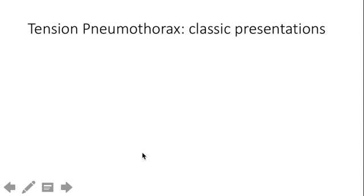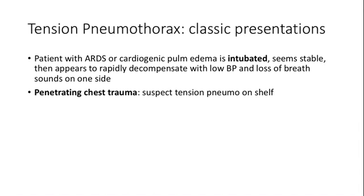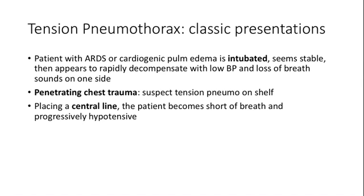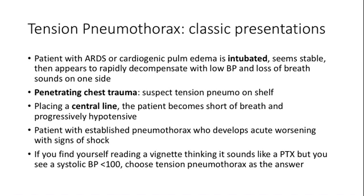Classic tension pneumothorax presentations to recognize in vignettes: a patient on a mechanical ventilator or with ARDS who was improving and then rapidly decompensates with hypotension and loss of breath sounds; anyone with penetrating chest trauma — call it tension pneumothorax until proven otherwise; a patient who develops shortness of breath and goes into shock while a central line is being placed; or a patient with a previously simple pneumothorax who acutely worsens and becomes hypotensive. Key rule: if you see a pneumothorax vignette with systolic blood pressure below 100, it's a tension pneumothorax.